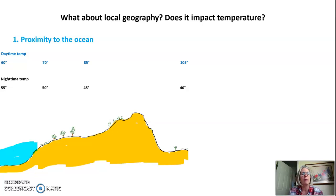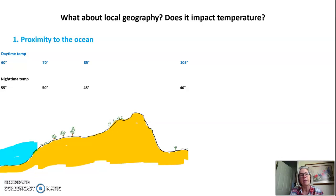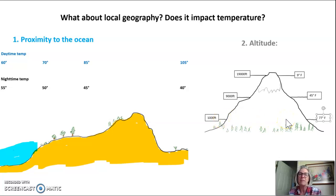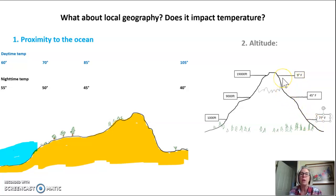The second thing to notice is the range of temperatures between day and night. Near the ocean the range is very small — maybe 60 degrees Fahrenheit during the day and 55 degrees at night. But inland of the coastal range, a high daytime temperature of 105 degrees Fahrenheit can drop to about 40 degrees Fahrenheit at night. Altitude also plays a huge role: at around 1,000 feet the daytime temperature might be 77°F, at 9,000 feet it might be 45°F, and at 19,000 feet it might be only 9°F. The higher you go in altitude, the lower the temperature.